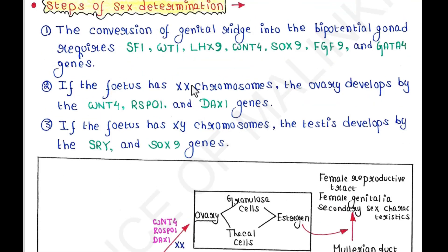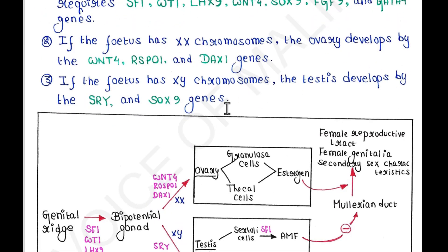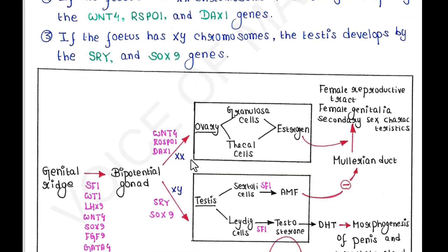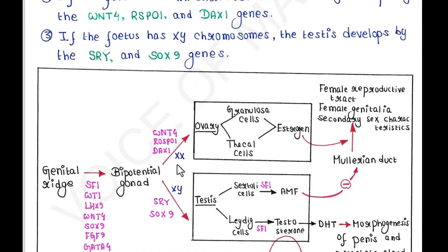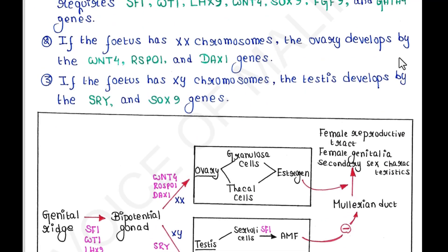If the fetus has XX chromosomes, the ovary develops by the WNT4, RSPO1, and DAX1 genes.